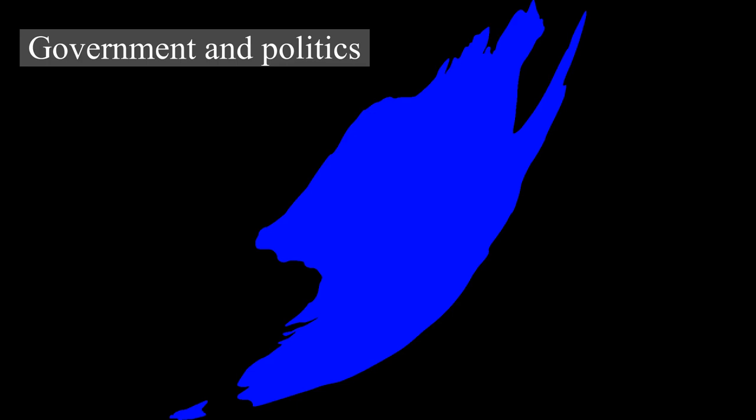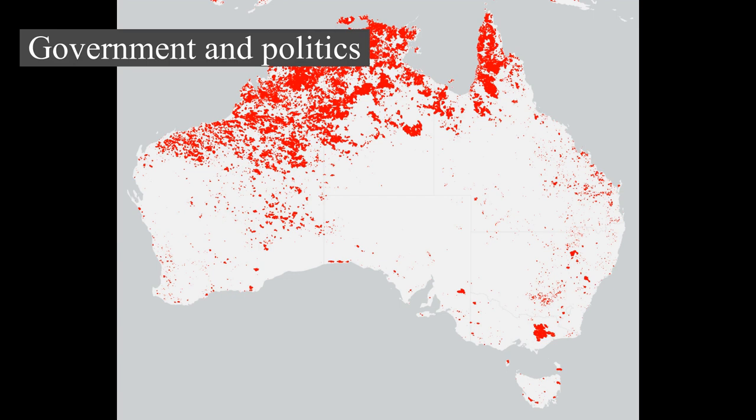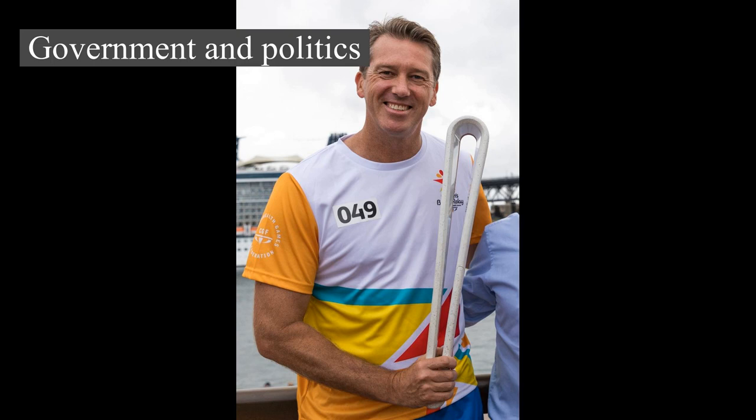The most notable exercise of these powers was the dismissal of the Whitlam government in the constitutional crisis of 1975. In the Senate, the upper house, there are 76 senators — 12 each from the states and two each from the mainland territories, the Australian Capital Territory, and the Northern Territory. The House of Representatives, the lower house, has 151 members elected from single-member electoral divisions, commonly known as electorates or seats, allocated to states on the basis of population, with each original state guaranteed a minimum of five seats.